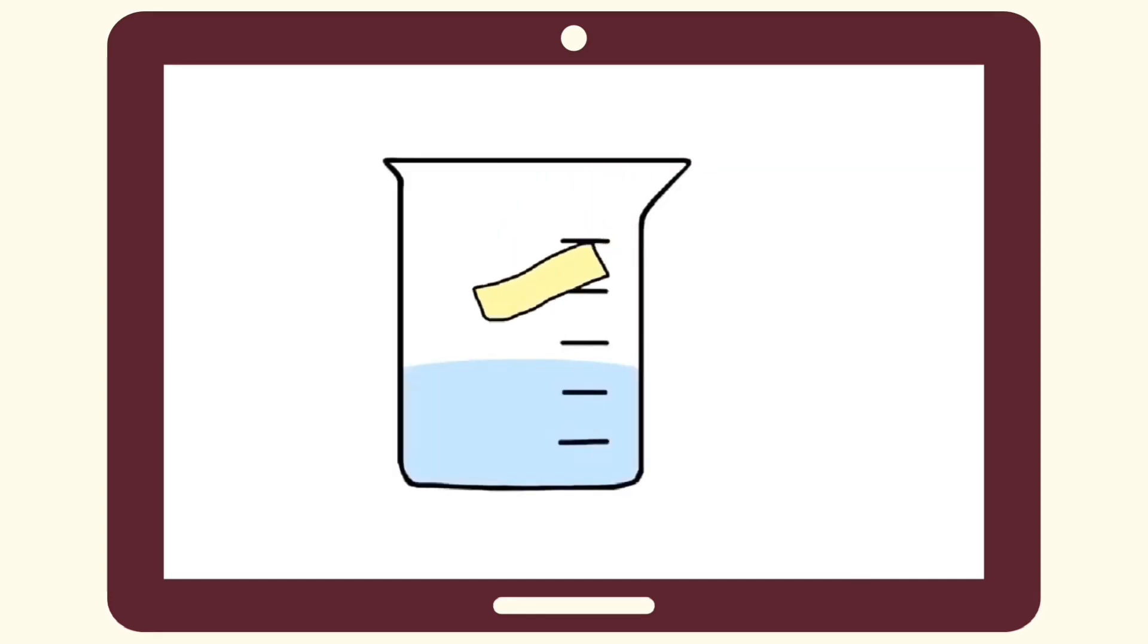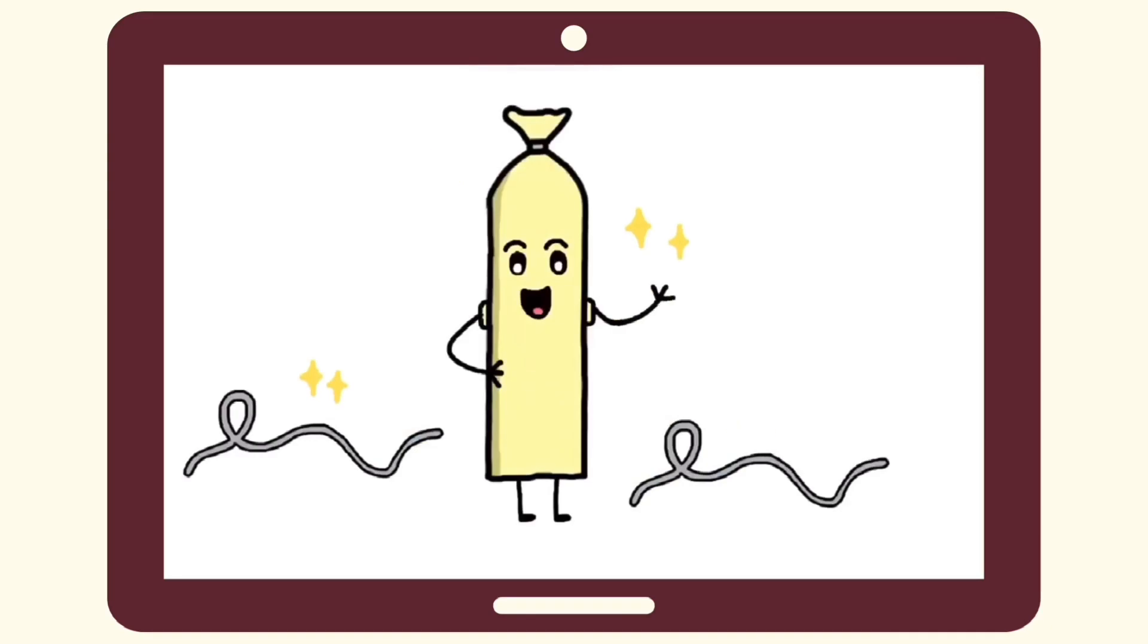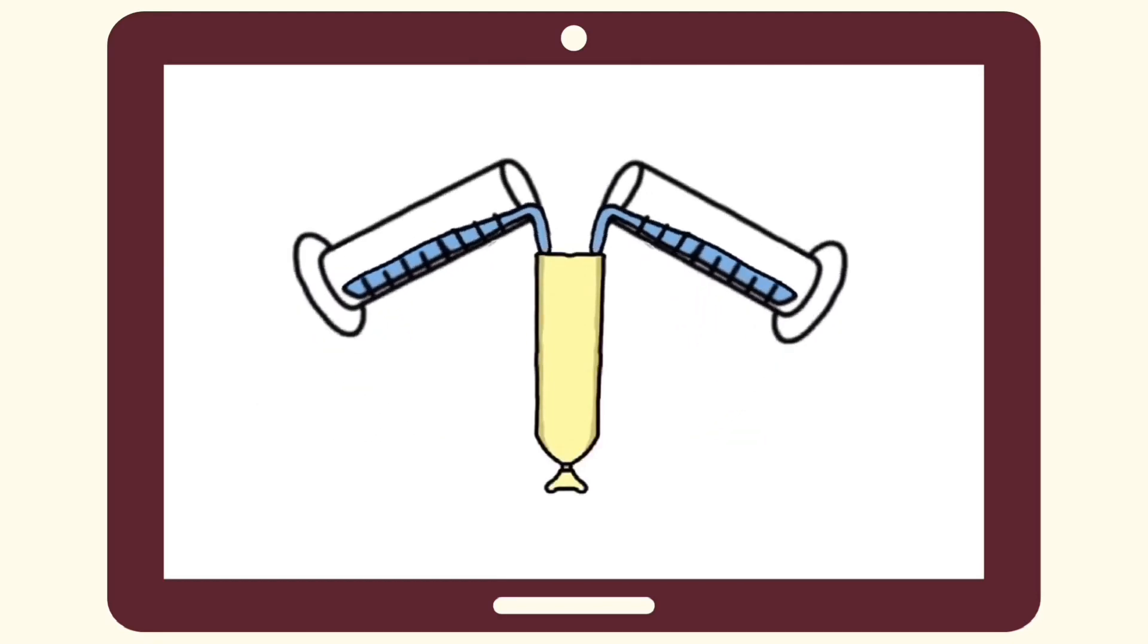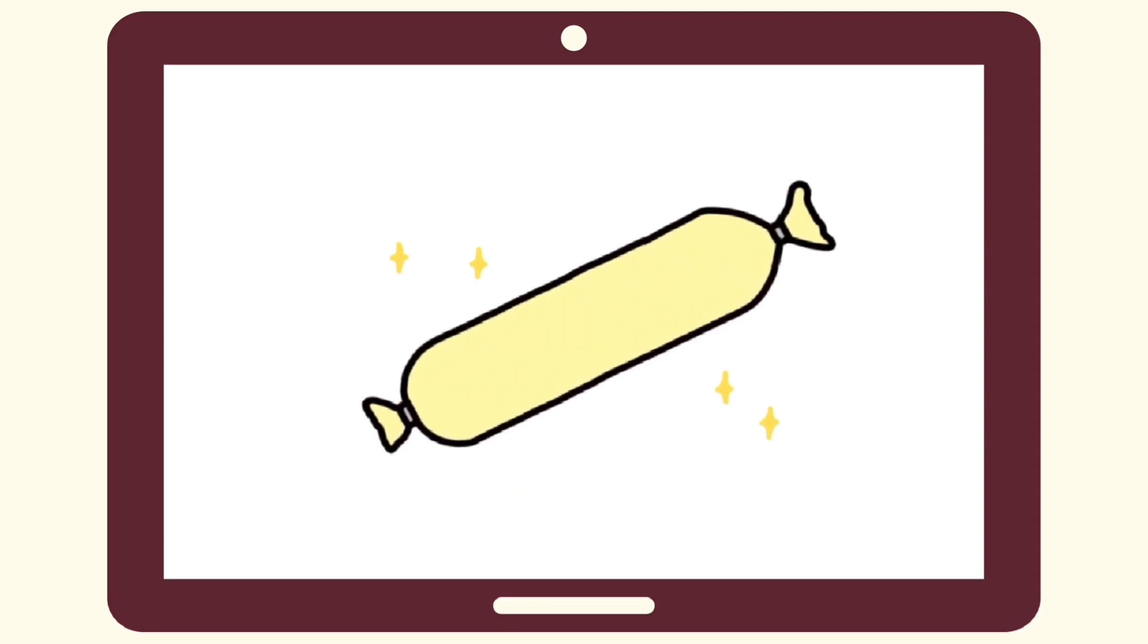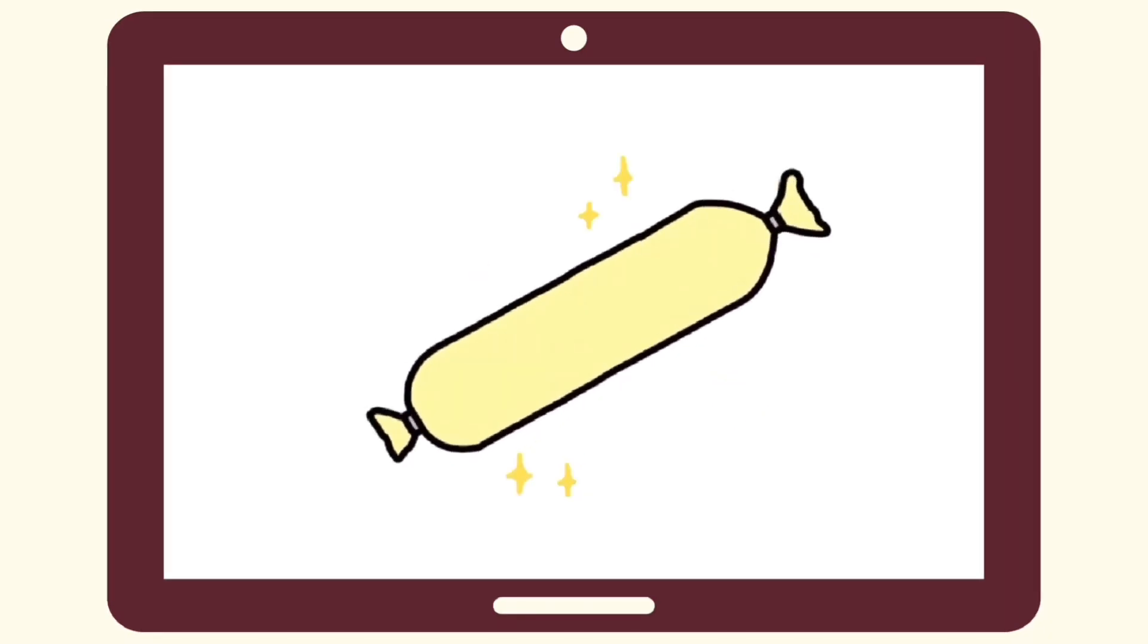First, soak the visking tubing in water for 5 minutes to soften it. Make a knot and tie one end of the visking tubing with thread to prevent leaking. Then, fill the visking tubing with 10ml glucose solution and 10ml starch suspension. Tie one end of the visking tubing tightly with a thread. The solution color is recorded.